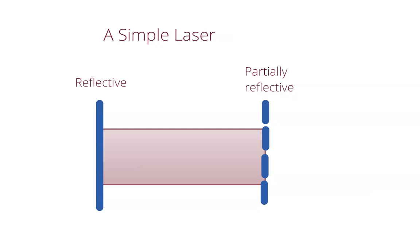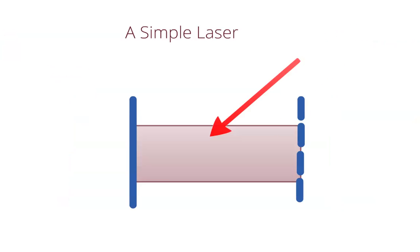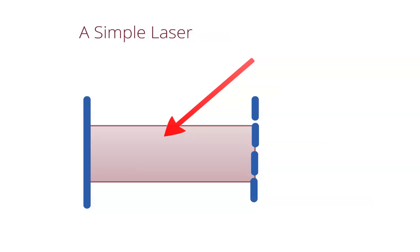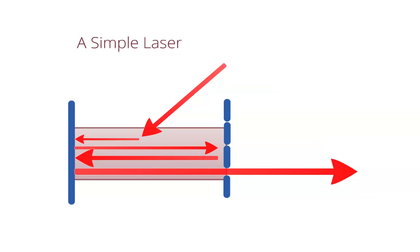Firstly we start with the lasing medium with two mirrors on each end, one which is completely reflective, the other partially reflective. The general idea is to pump energy into the system, causing photons to be emitted. These then pass through the medium back and forth and are amplified until they are emitted out of one end.